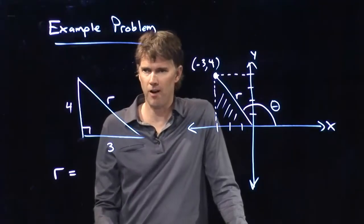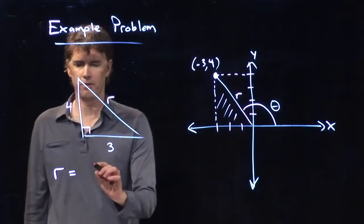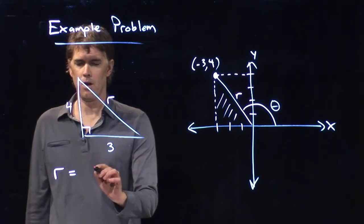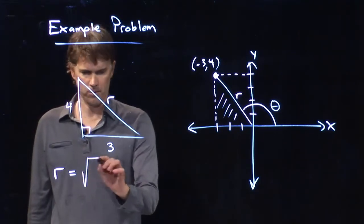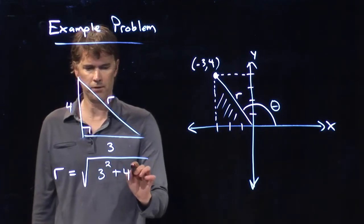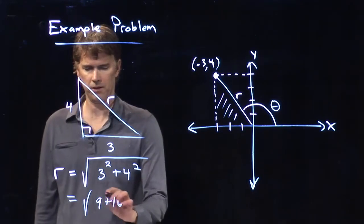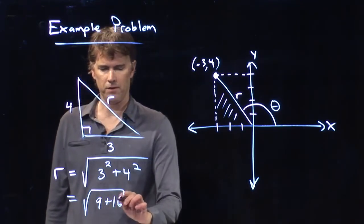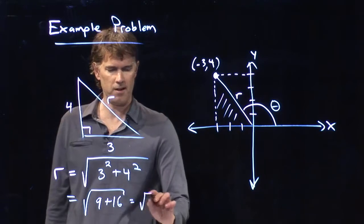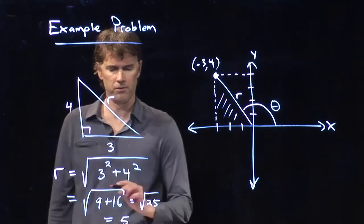5. It's a 3, 4, 5 triangle. Okay, that's one of those special right triangles. Let's just convince ourselves that that is true. r is equal to the square root of 3 squared plus 4 squared, which is the square root of 9 plus 16. 9 plus 16 is equal to 25. And the square root of 25 is, of course, 5.